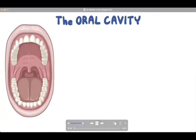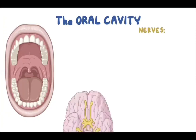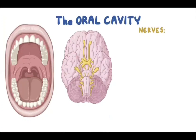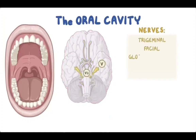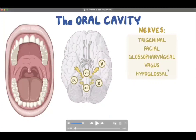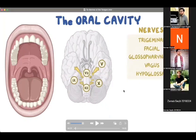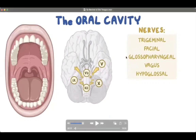The oral cavity, though quite small, is supplied by a dense network of nerves and blood vessels. Nerve supply comes from branches of cranial nerves including the trigeminal, facial, glossopharyngeal, vagus, and hypoglossal nerves. The hypoglossal nerve supplies the muscles, and the lingual nerve covers the anterior two-thirds of the tongue. Blood supply comes from branches of the external carotid artery.